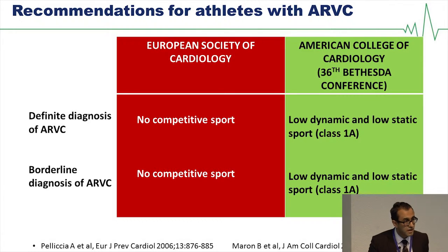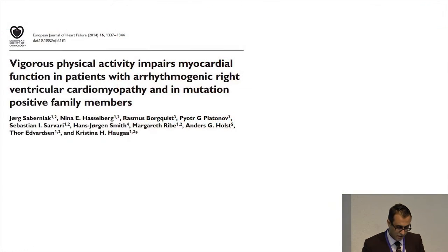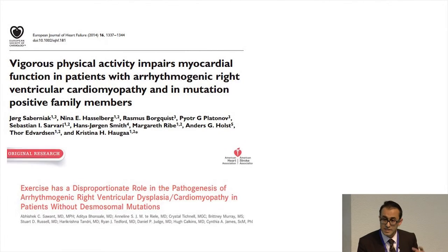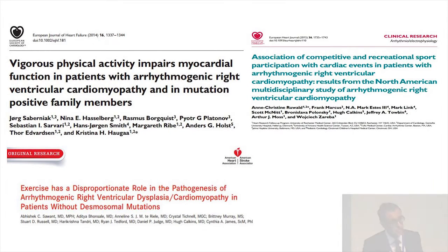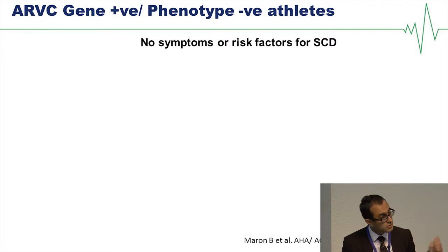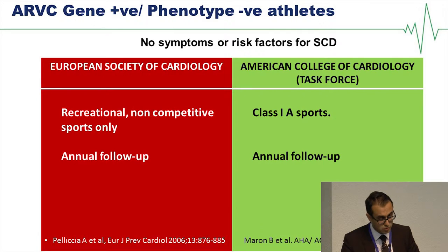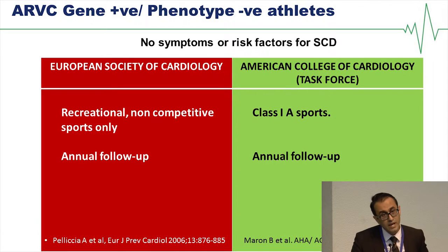In line with this, if there is a definitive diagnosis of ARVC, the ESC says no competitive sport, and they also advise no competitive sport for borderline diagnoses. The Americans, however, do allow Class 1A low-dynamic, low-static sports. Over the last year, a plethora of papers have demonstrated that endurance exercise in particular is associated with a lower age of presentation, a higher risk of ventricular tachycardia, and more rapid progression to heart failure in persons with ARVC and gene-positive carriers. For those without symptoms or risk factors, the ESC recommends recreational sports only with annual surveillance, whereas the Americans allow Class 1A sports with annual follow-up.